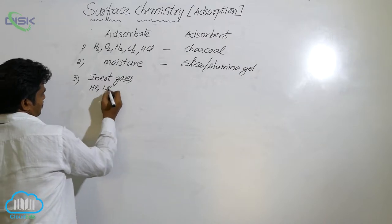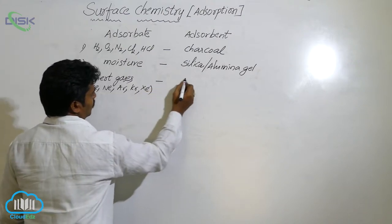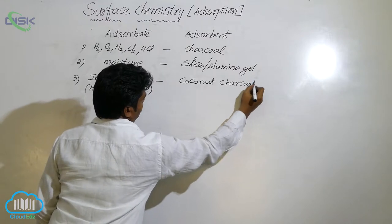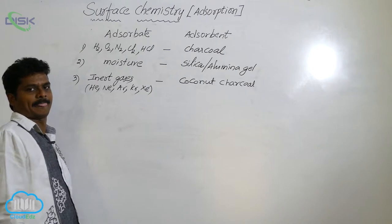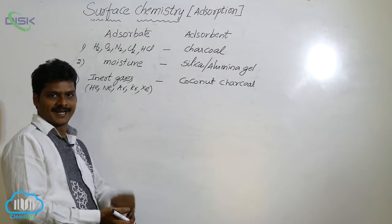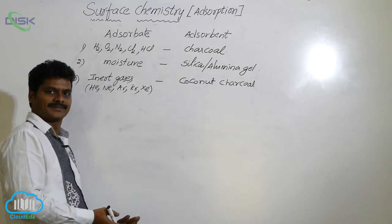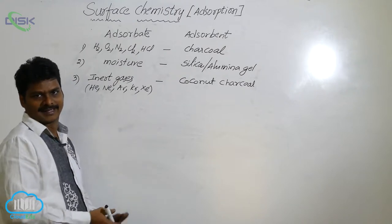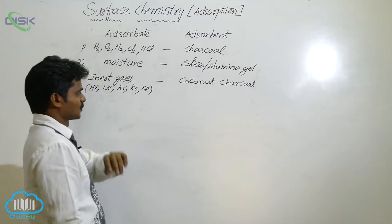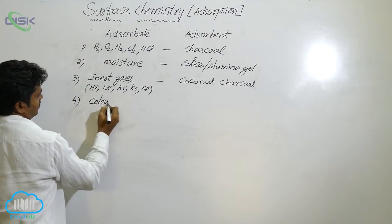Third, for inert gases — noble gases like helium, neon, argon, krypton, and xenon — coconut charcoal acts as the adsorbent. We have a method called the Dewar method in which the noble gases present in air are separated using coconut charcoal. We will discuss that in the chapter on noble gases.